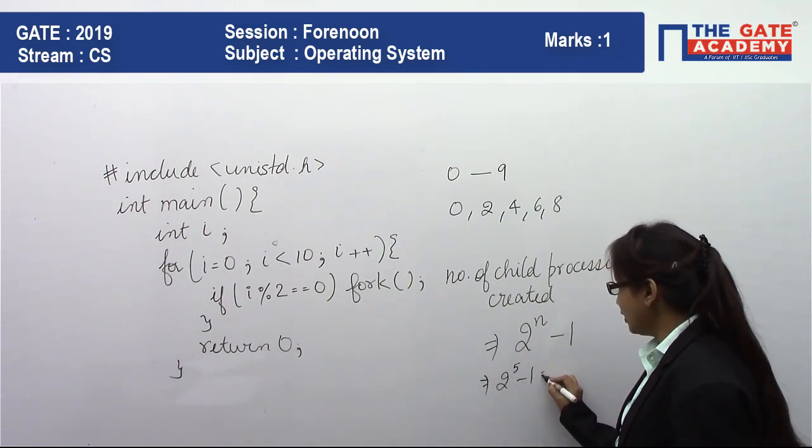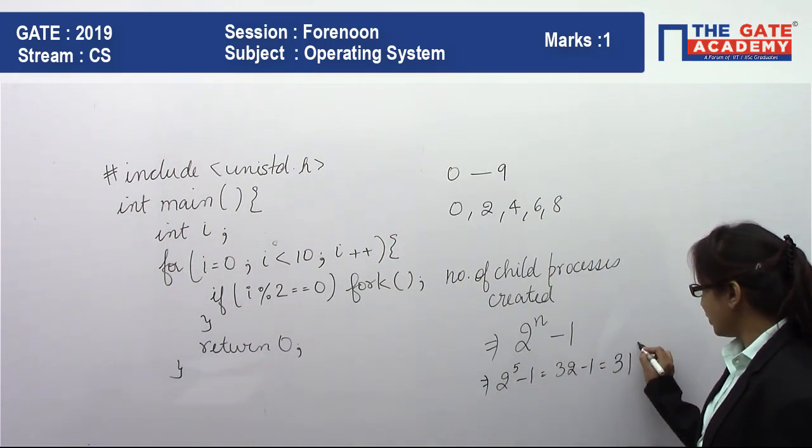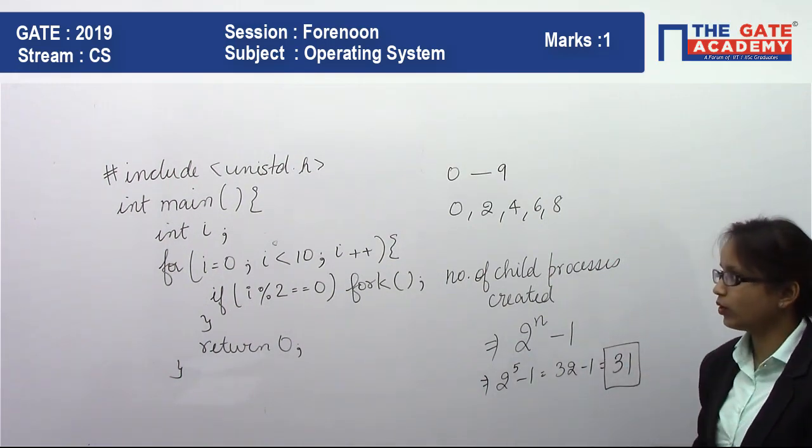That is 32 - 1. The answer for this question is 31. The number of child processes created here is 31.